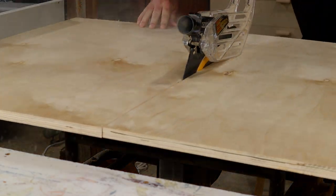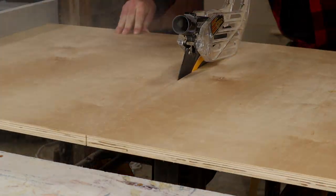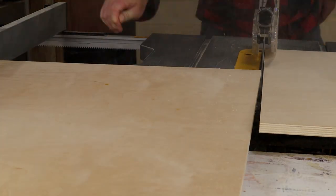At the table saw, I cut the two side panels, as well as the two lower shelves, and then the top.